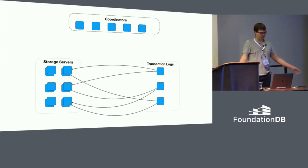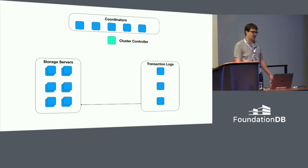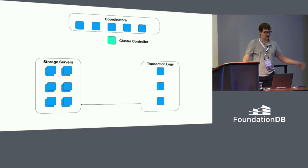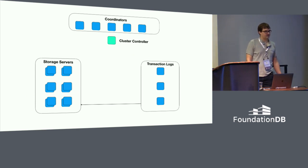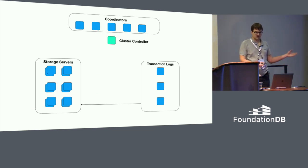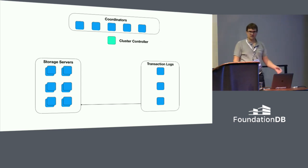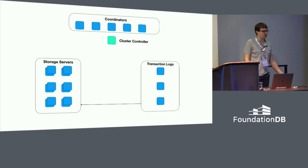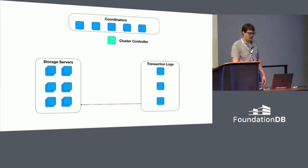The cluster controller is a leader elected by the coordinators. Its job is to organize all of the processes in the cluster into the full system. When every process starts up, it talks to the coordinators to find the cluster controller, then registers itself — saying things like 'I have a disk, I prefer to be a storage server.' The cluster controller takes all registered workers and assigns them roles: you become a transaction log, you become a storage server. It's also doing failure monitoring, continually talking to processes to determine if they fail.